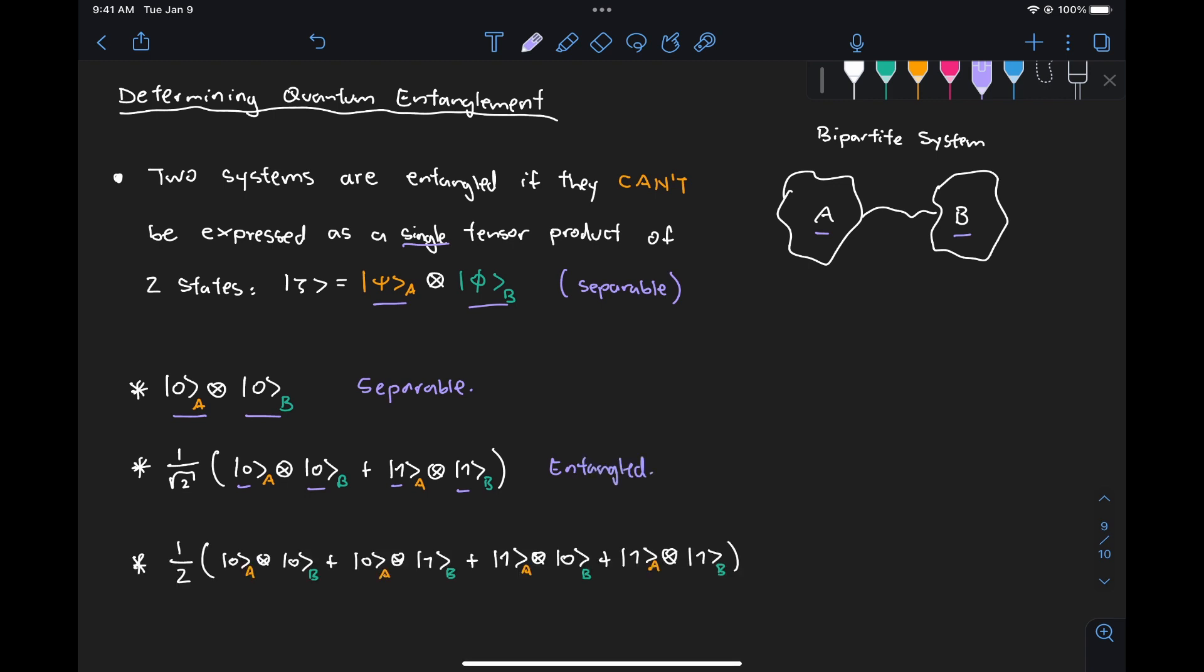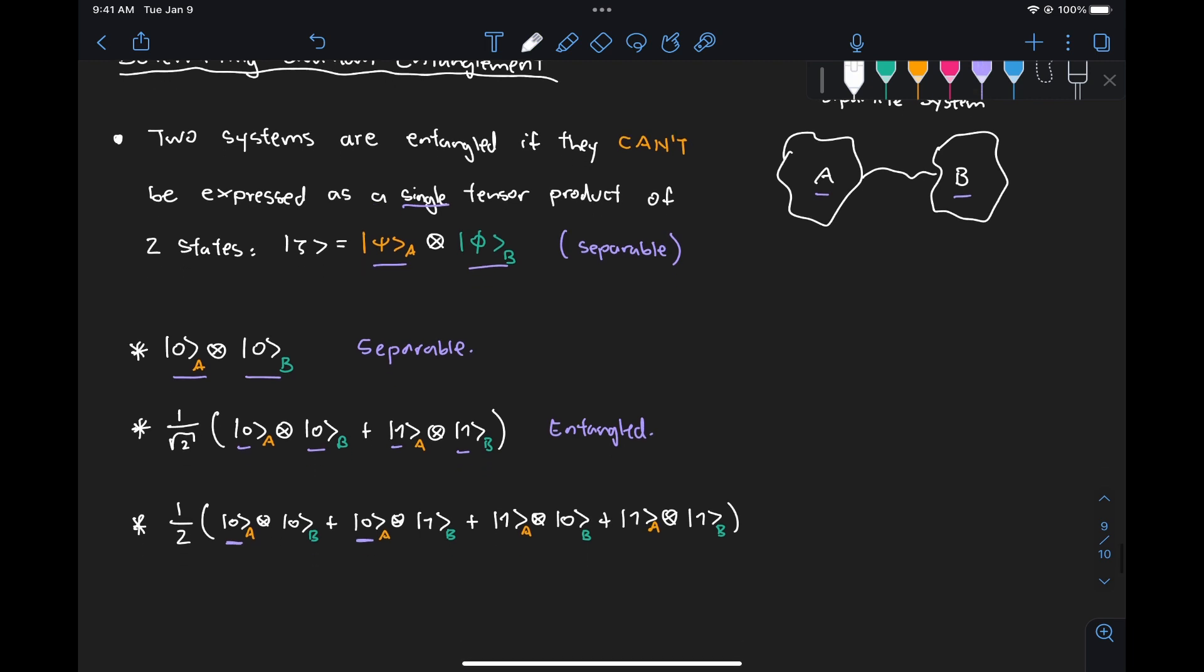Now how about this other state? So here we have the sum of four tensor products and if you've worked with quantum states before you can probably recognize that this is the equal superposition state, but what's key here is that there is a way to factorize things here. So we have for example this 0A here, so we can start putting things together. So we can say this is equal to 1 half of 0 tensor 0 plus 1, and this will be for A and this for B.